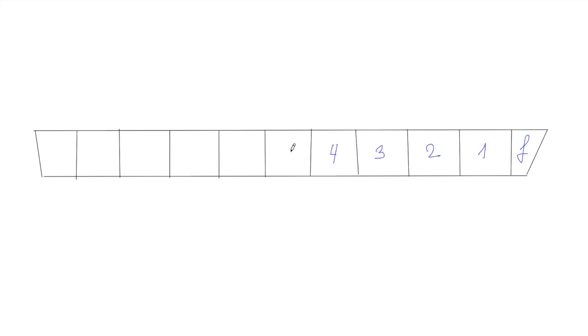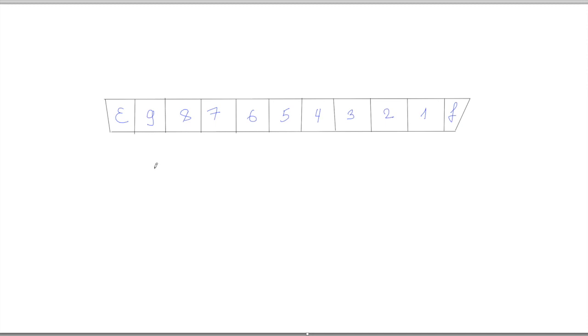Here we have a vessel which consists of nine cargo compartments, one forward compartment, and one engine compartment. Approximately in this position we have the middle of the vessel. The question is: in which direction will our vessel be trimmed — forward or aft? We can see that in cargo compartment number three we have loaded 3,000 tons, and in cargo compartment number nine we have loaded 1,000 tons. The question is: will our trim be to the forward or to the aft? If you think we will have trim forward, you are wrong.